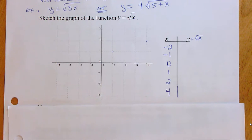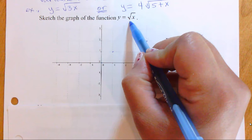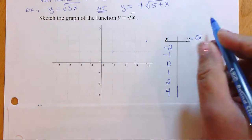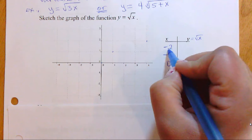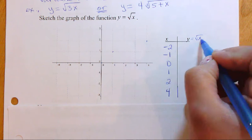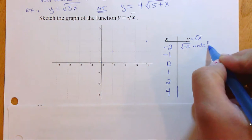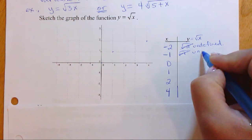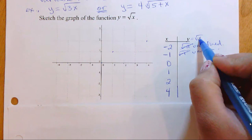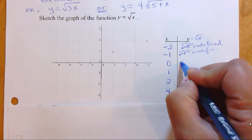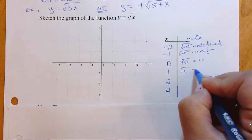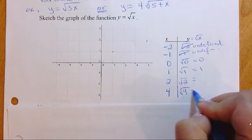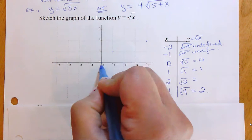Our parent function is y equals the square root of x. To get familiar with it, we're going to make a quick table of values. If I take negative two and put it under the square root sign, it's undefined — we don't deal with negatives under the square root. For zero, the square root of zero equals zero. Square root of one is one. Square root of two is just the square root of two. And the square root of four equals two.